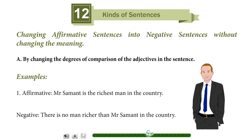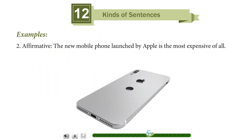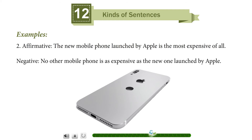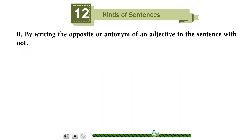Another example of degree-of-comparison transformation. Affirmative: The new mobile phone launched by Apple is the most expensive of all. Negative: No other mobile phone is as expensive as the new one launched by Apple.